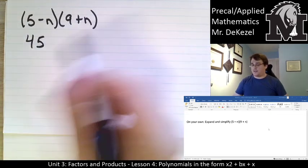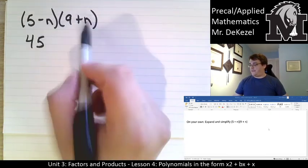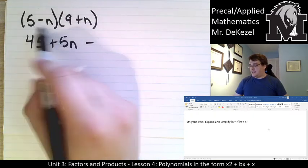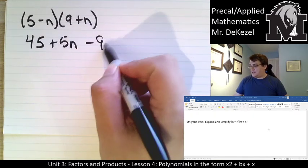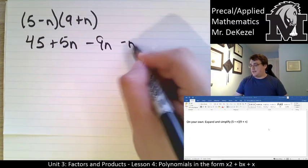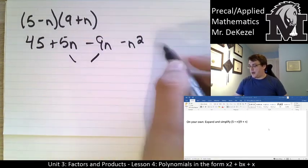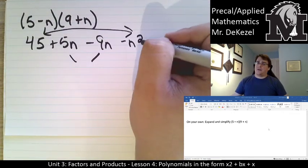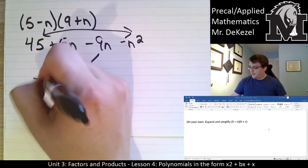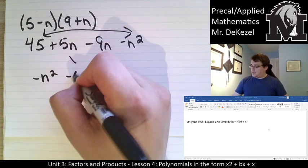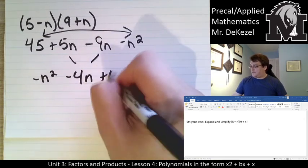So 5 times 9 is 45, yeah that is for the firsts. Outside is 5 times n, so that's 5n. Insides is negative n times 9, so that's negative 9n. And then negative n times n is negative n squared. I'm going to combine, and I'm also going to switch the positions of these just because that's how we like to write it. So I've got negative n squared, 5n minus 9, that's minus 4n plus 45.